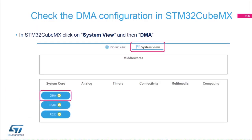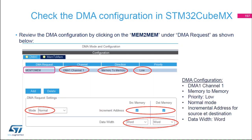Once STM32CubeMX is open, go to the System View, then click on DMA. We're going to study the DMA configuration. In DMA-1, click on MEM-to-MEM and look at the channels used. The channel used is DMA-1 Channel 1, the direction is memory-to-memory, and the priority is low. The mode is normal, and we increment both the source and the memory address after each transfer.